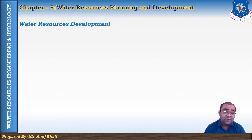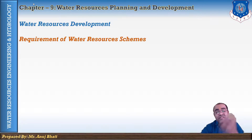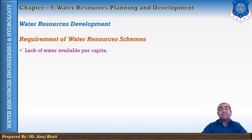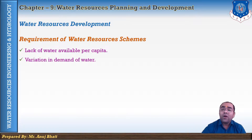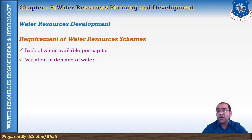Let's start with the requirements of water resource schemes. Planning and management of water resource systems are essential because of several factors. The first is the gradual decrease of per capita available water on this planet, especially in our country. Water is used for many purposes, and demands vary in time and space, which necessitates better planning and management of available water resources.